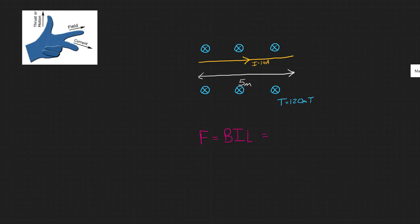The magnetic field strength is 120 milliteslas, so 120 times 10 to the minus 3, multiplied by the current of 14 amps, multiplied by the length of the conductor in the magnetic field, which is 5 metres. And that gives us a force of 8.4 newtons.